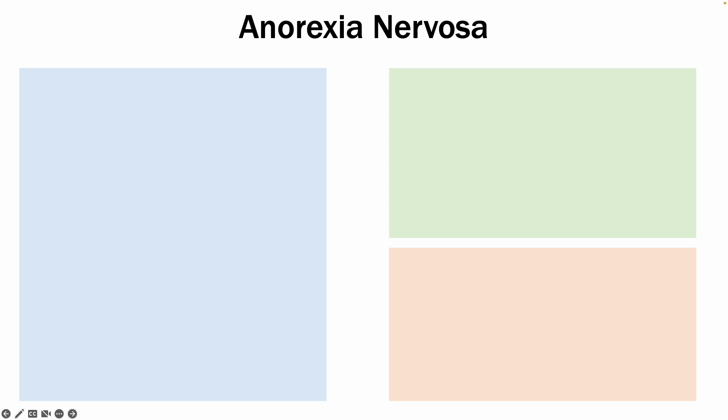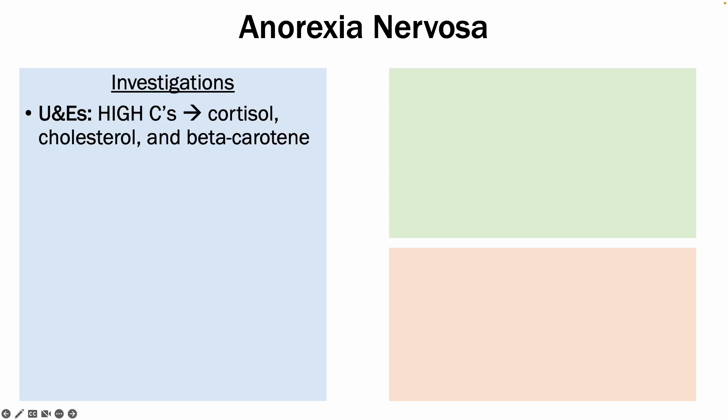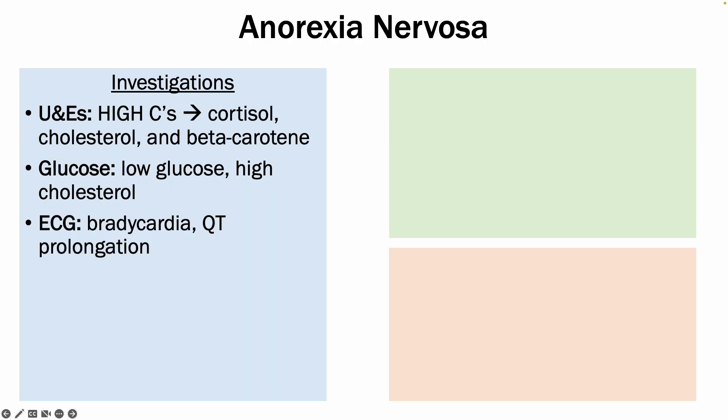In terms of investigations, other than the physical features, you would see elevated cortisol, cholesterol, and beta carotene. Your glucose will be low and your cholesterol will be high. On an ECG, you would see bradycardia and QT prolongation.